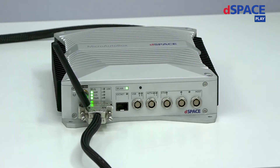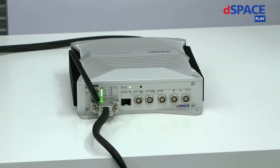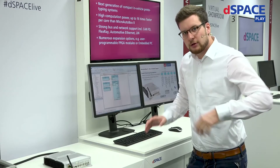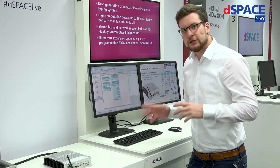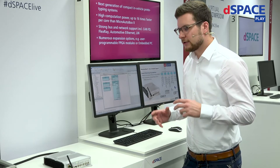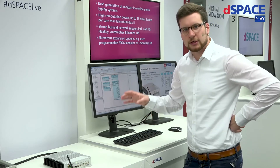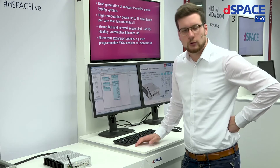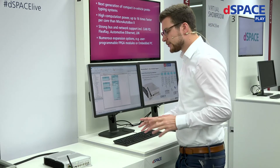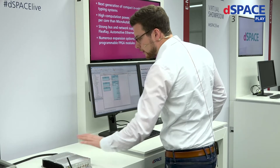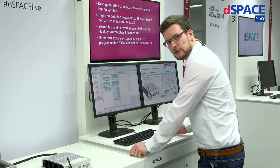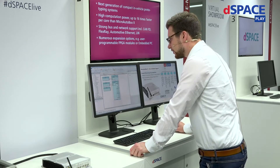So why do we do this? In rapid prototyping, you often equip old vehicle architectures with new components, so you need gateways that allow, for example, a new gearbox ECU to communicate with an old engine ECU. That's exactly the use case we want to show you — a simple gateway to connect new components into old vehicle architectures.